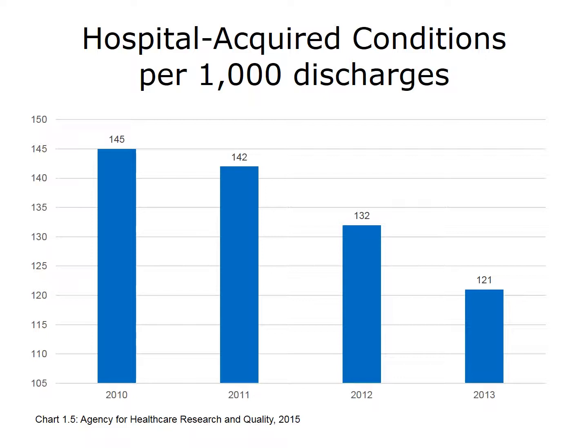One area of success has to do with rates of hospital-acquired conditions—adverse events such as infections acquired in the hospital. As the graph highlights, rates of hospital-acquired conditions decreased between 2010 and 2013.